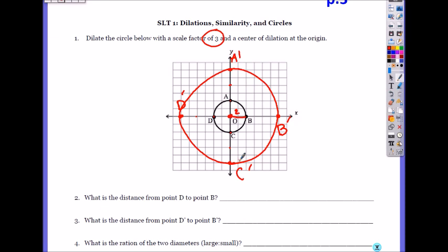Okay, so our goal is to prove those two circles are similar. Let's look at all the other measurements. What is the distance from point D to point B? D to B is 4 units.